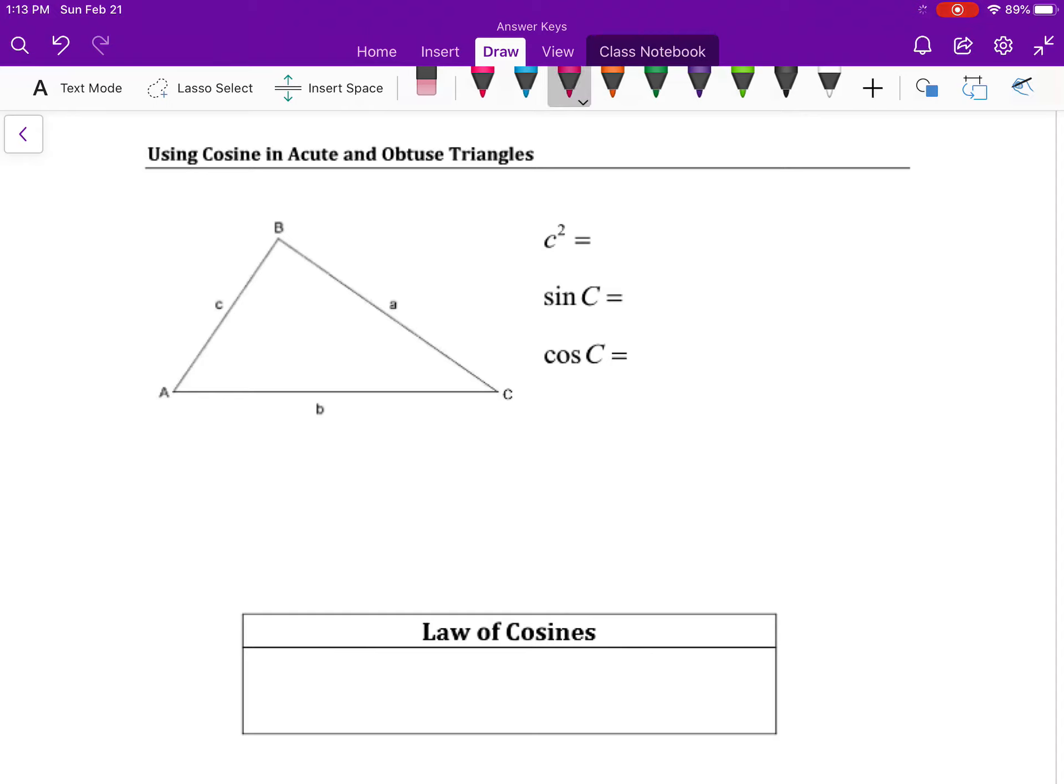We're going to approach it the same way. We are going to start by drawing altitude h. And this time, since we are working with cosine, that base and how it is split into two parts is going to be important to us.